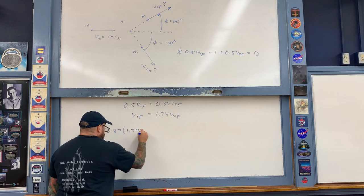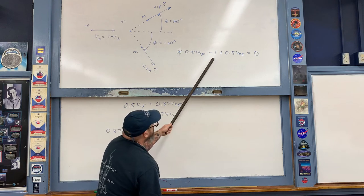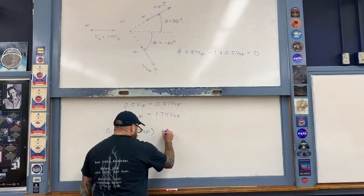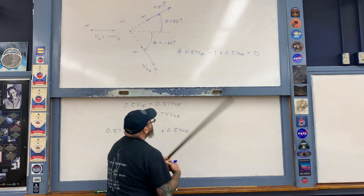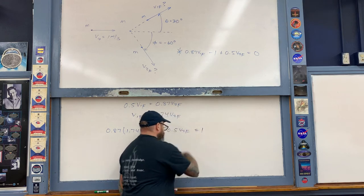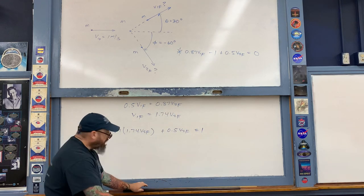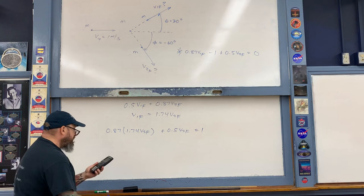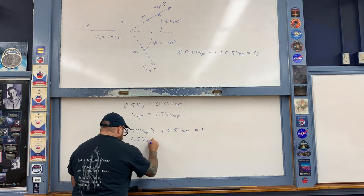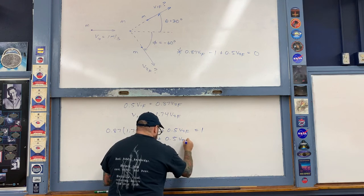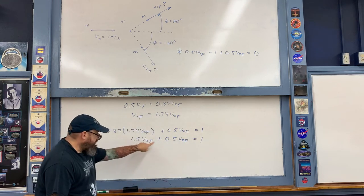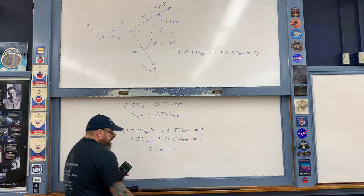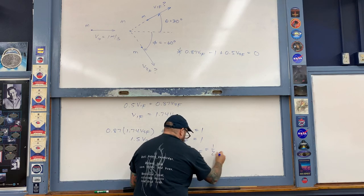Substituting v1_final = 1.74·v2_final into the x-direction equation: 0.87 × 1.74·v2_final − 1 + 0.5·v2_final = 0. Computing 0.87 × 1.74 ≈ 1.5, then adding 1.5 + 0.5 gives 2·v2_final = 1. Dividing by 2, v2_final = 0.5 meters per second.